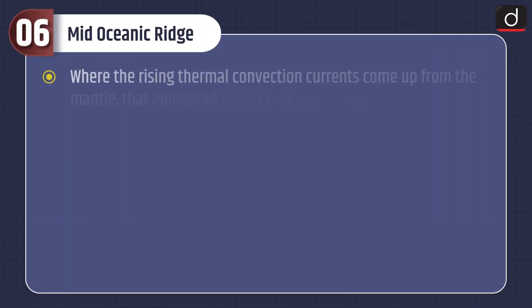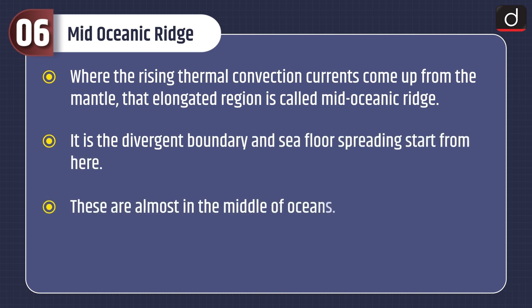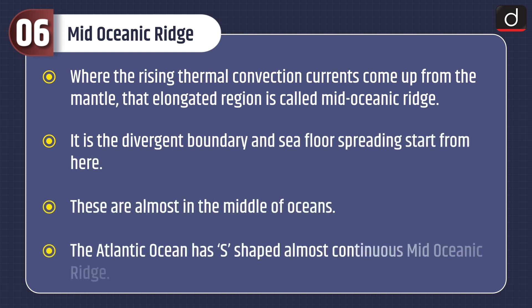Mid-Oceanic Ridge: While rising thermal convection currents come up from the mantle, that elongated region is called the mid-oceanic ridge. It is the divergent boundary and seafloor spreading starts from here. These ridges are almost in the middle of oceans. The Atlantic Ocean has an S-shaped, almost continuous mid-oceanic ridge.